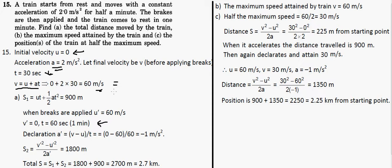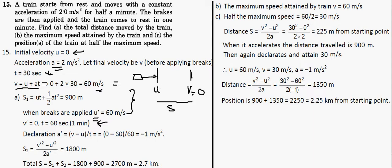Now we have to find the total distance moved by the train after the brakes are applied, when the velocity reaches its maximum. When the brakes are applied, we have some initial velocity at that point. The train will come to rest, so the final velocity becomes zero. Whatever was the final velocity before becomes the new initial velocity for the braking phase — that is 60 meters per second.